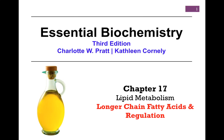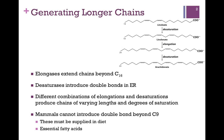We're continuing our studies in Chapter 17, Lipid Metabolism. In this lesson we want to look at generating longer chain fatty acids and also regulation of fatty acid synthesis. To generate longer chains, we use enzymes that are referred to as elongases. This allows us to extend fatty acid chains beyond the 16 carbons we find in palmitate.